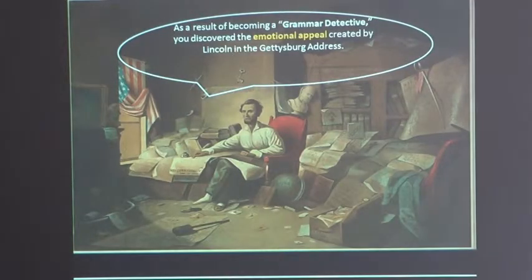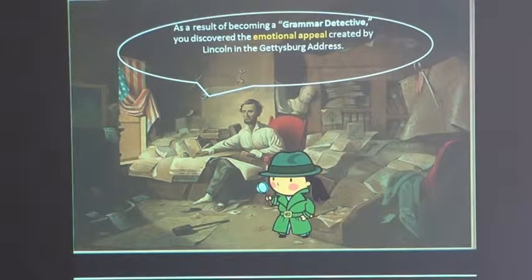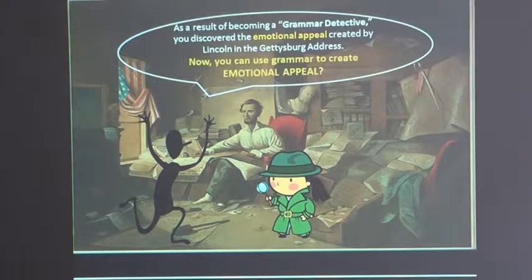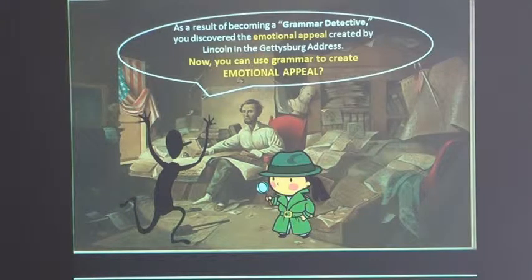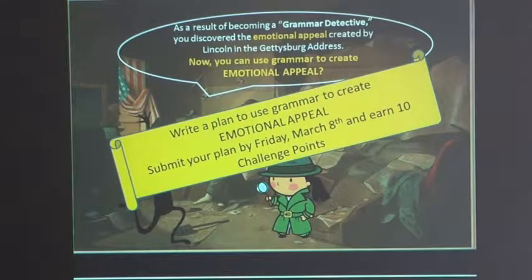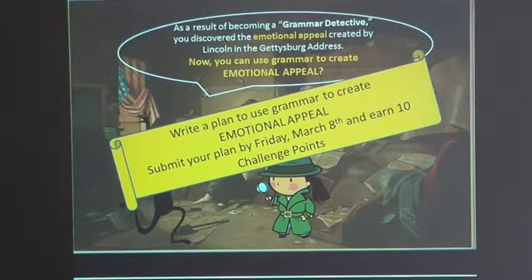As a result of becoming a grammar detective, you discovered the emotional appeal created by Lincoln in the Gettysburg Address. Now you can use grammar to create emotional appeal. Write a plan to use grammar to create emotional appeal. Submit your plan by Friday, March 8th, and earn 10 challenge points.